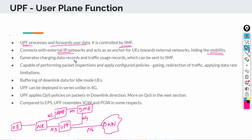The UPF generates charging data records and usage records, which are sent over to the SMF. One element also possible in the network is the charging function, CHF, which is connected to the SMF. The UPF is in direct line with all user plane traffic, so it has the closest knowledge about how much data a subscriber is using. Based on that, it generates certain records and events delivered to the SMF, which then generates CDRs for a given subscriber and sends those to the CHF at predefined times or based on the amount of data.